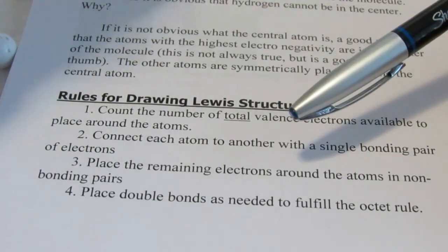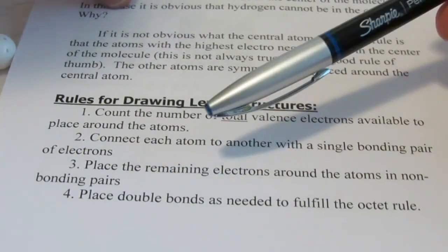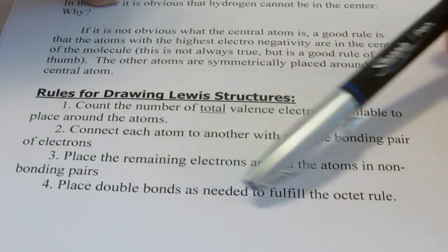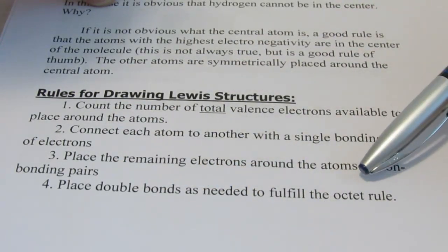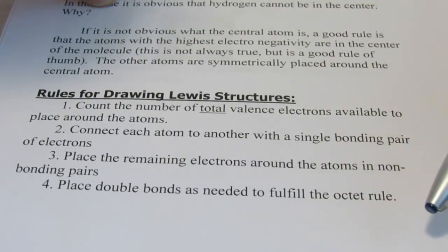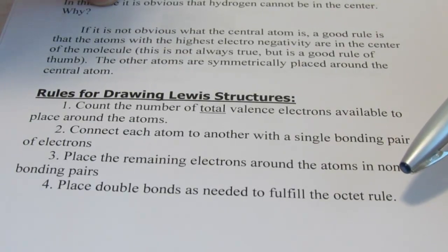And then the remaining electrons, what you're going to do is you're going to place them around the atoms as non-bonding pairs trying to complete your octets. Sometimes you might need a double bond and you might need a triple bond. But you need to make sure that you keep in mind the octet rule with regards to stability and why atoms are reacting and bonding in the first place. It's to get those four pairs of valence electrons.